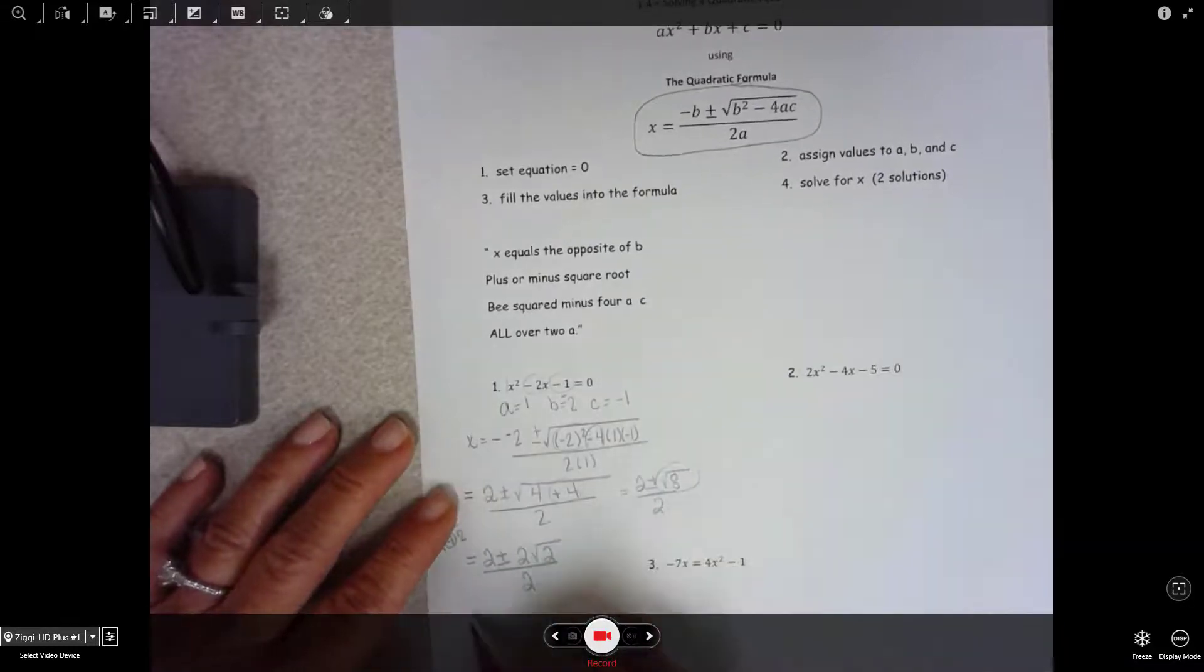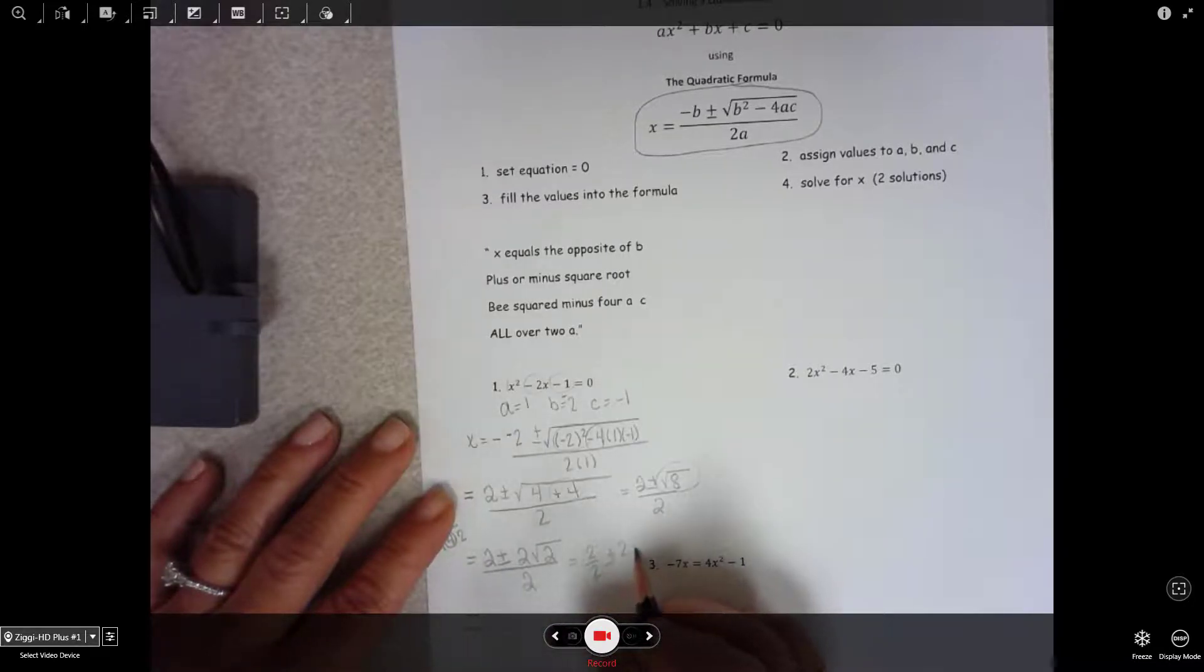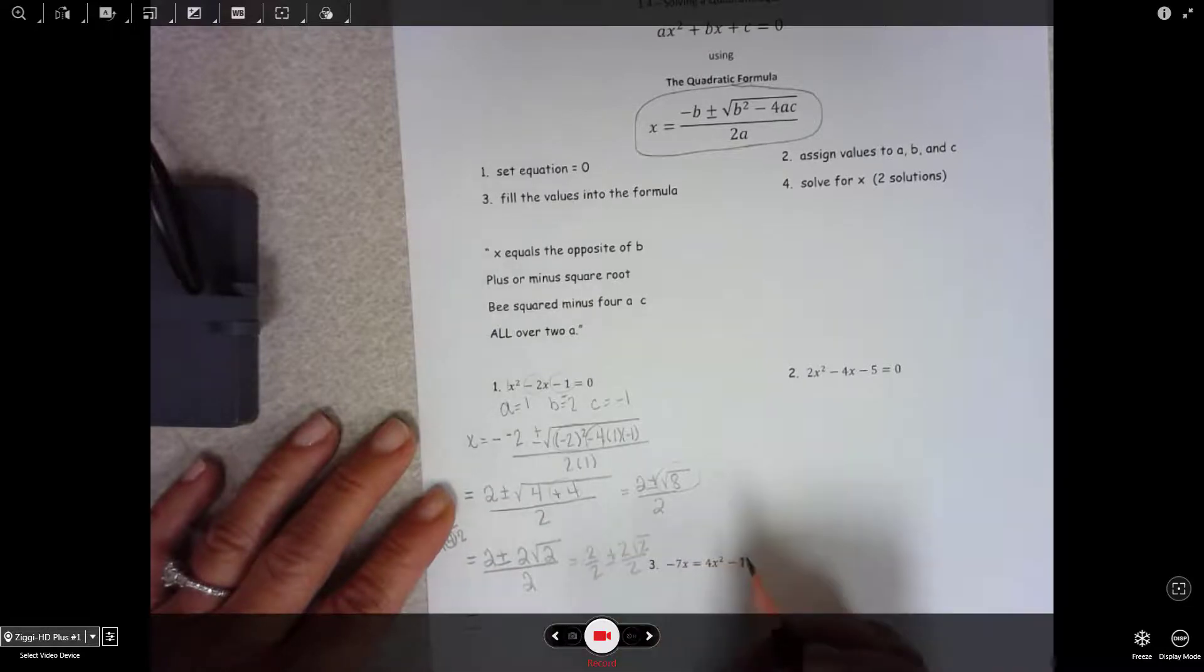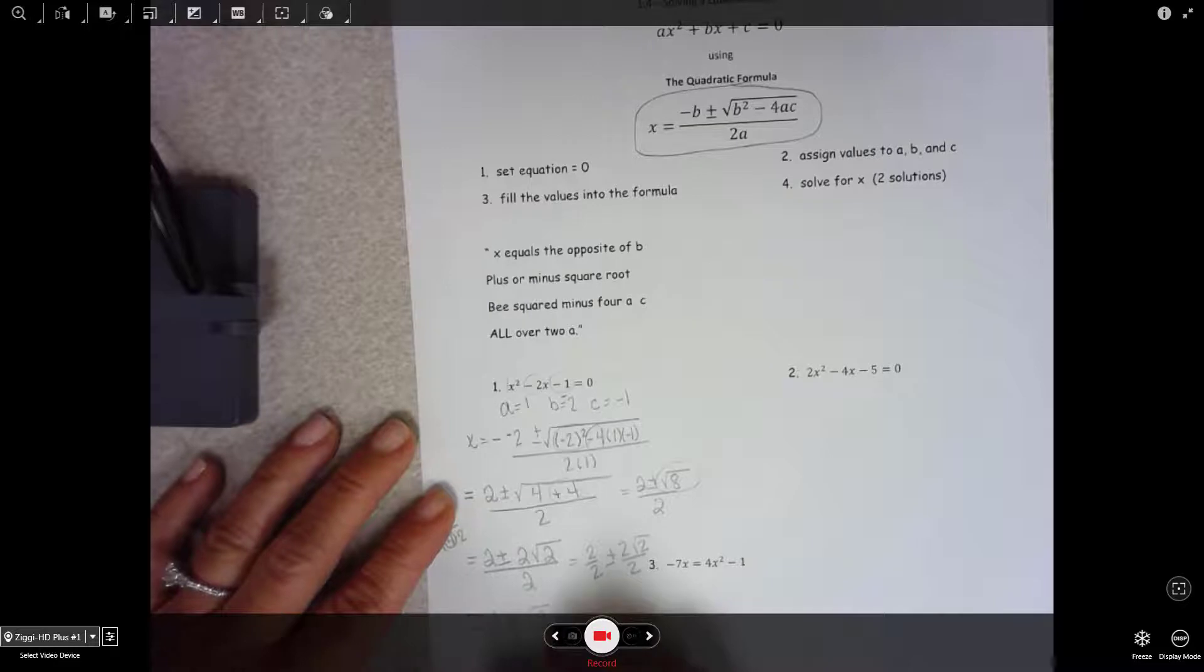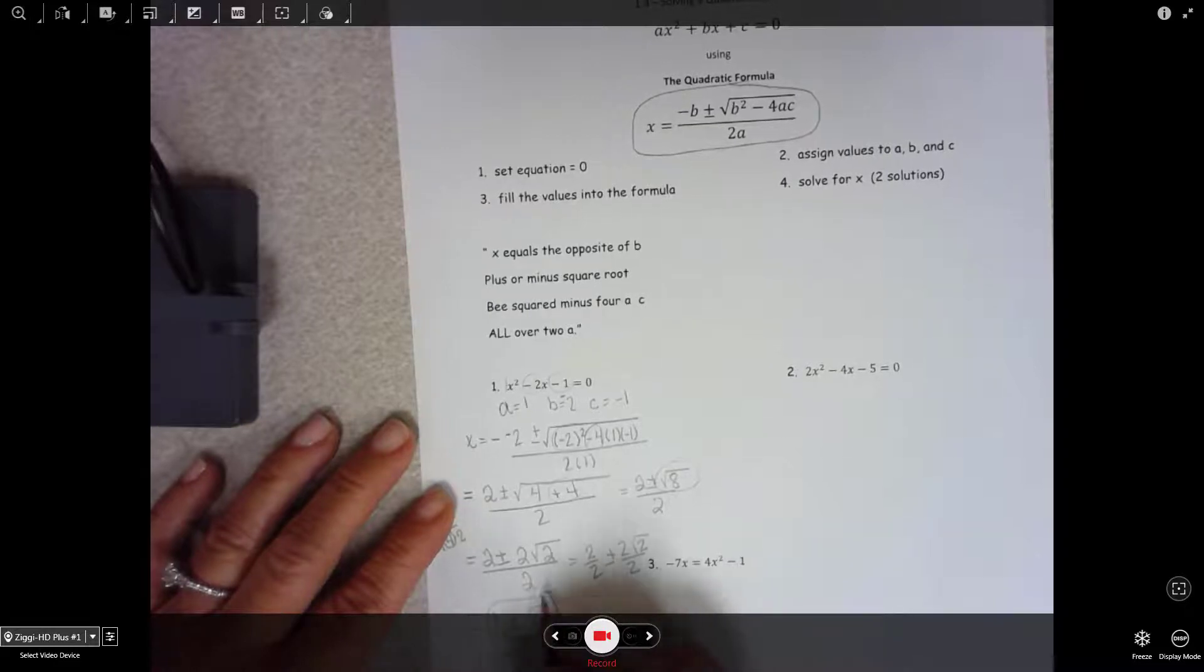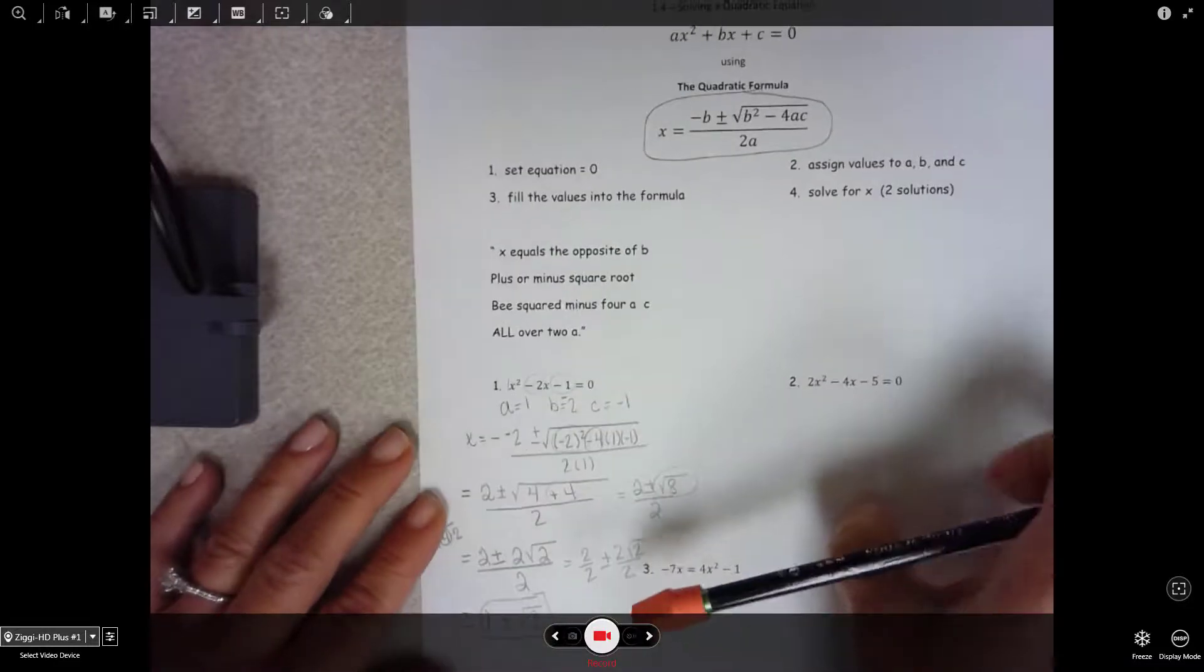Now this is the answer, but you could go one more because this is the same thing as both terms or each term over 2. So 1 plus or minus square root of 2 would be actually the answer that I would prefer.